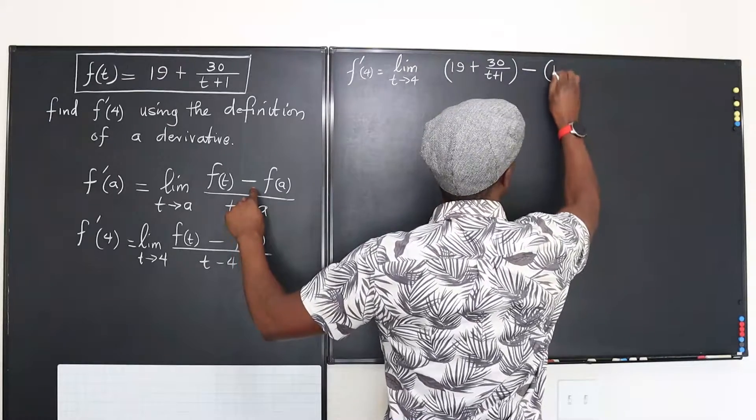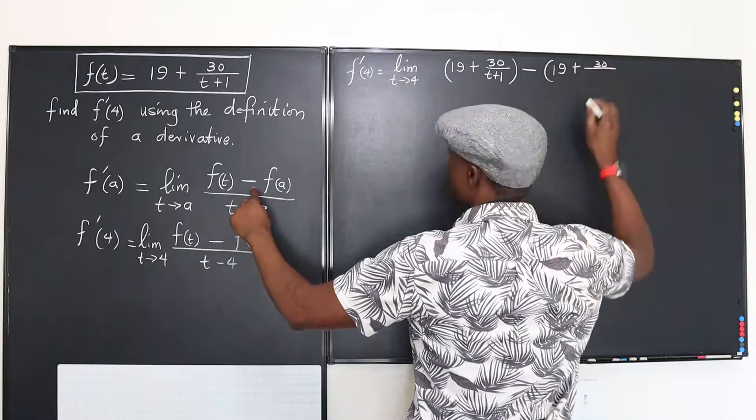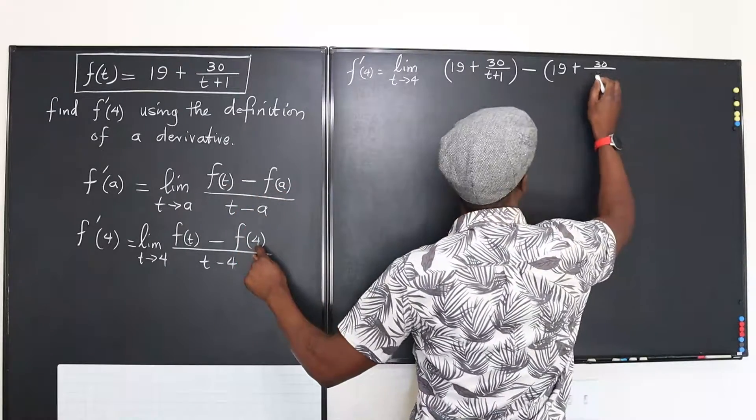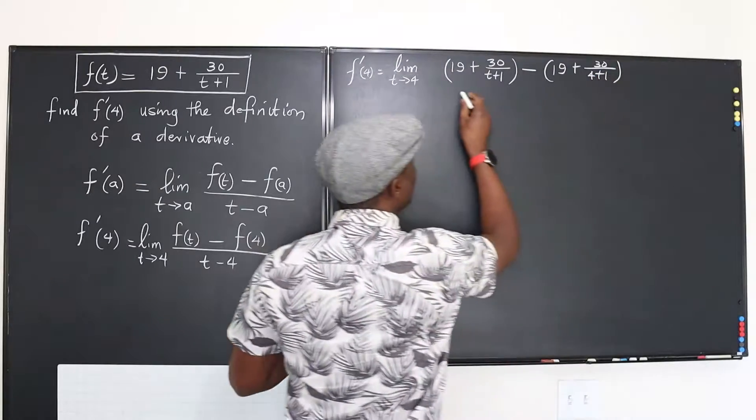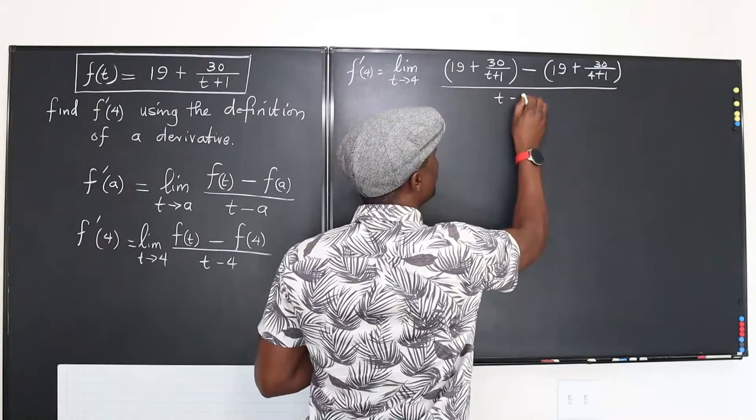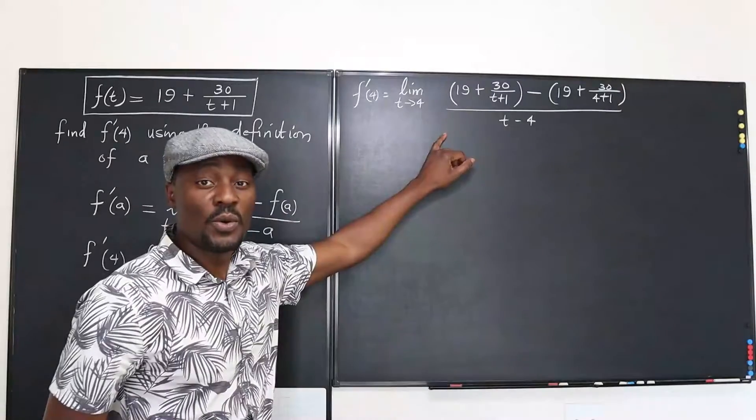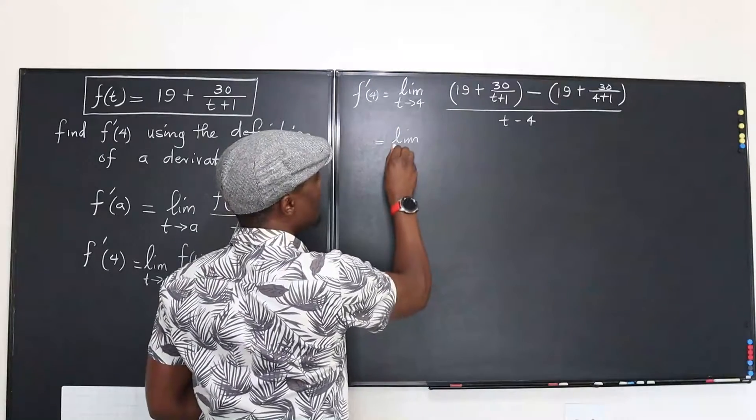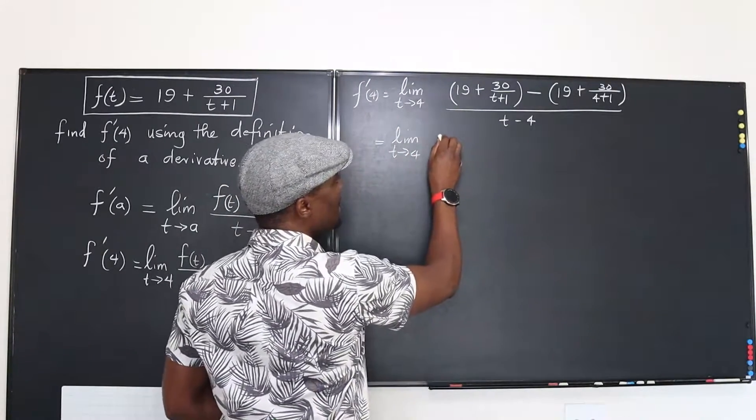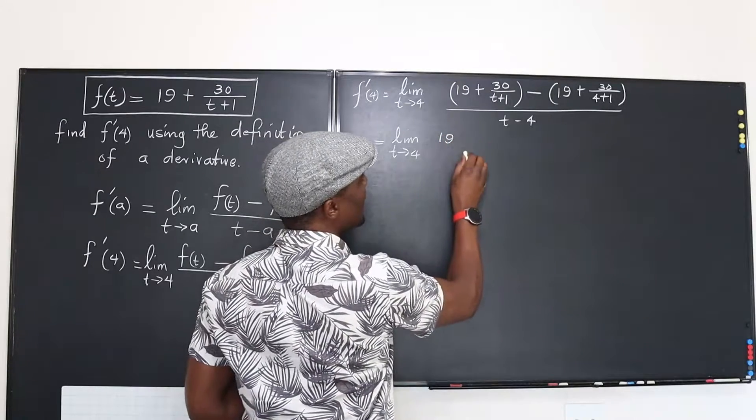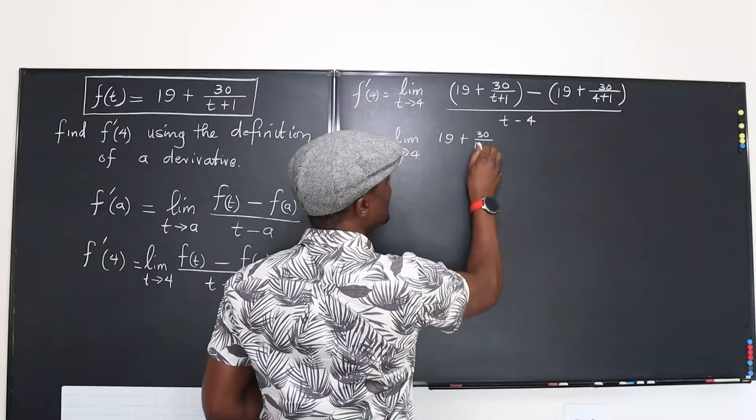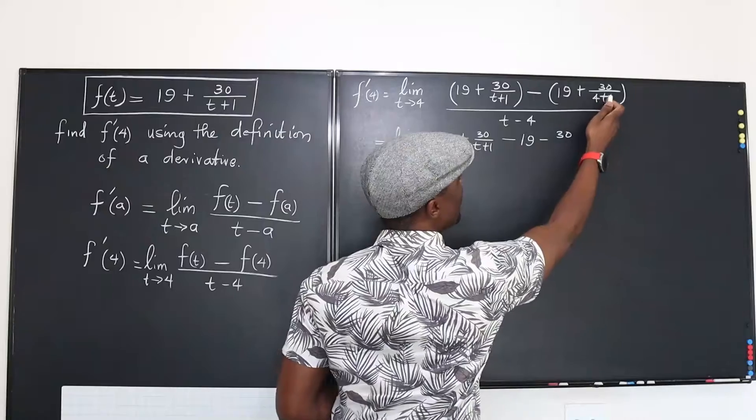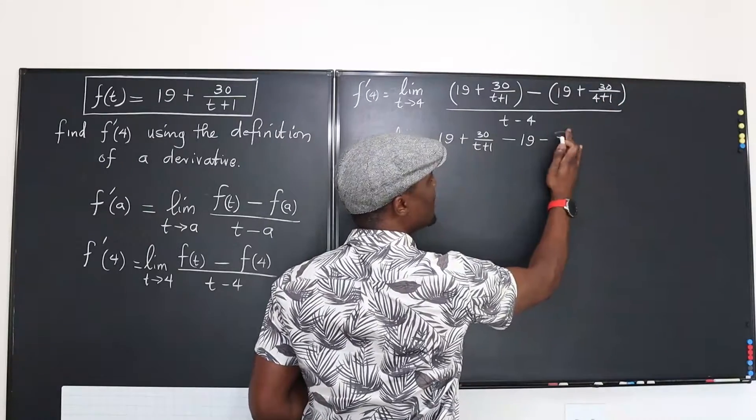So if we take the time to distribute what we have here, this is what we're going to end up with. The limit as t approaches 4, this is going to be 19 plus 30 over t plus 1 minus 19 minus 30 over 5, which is just going to be 6.